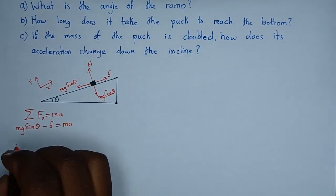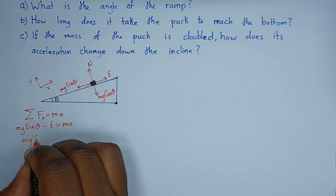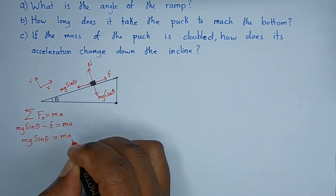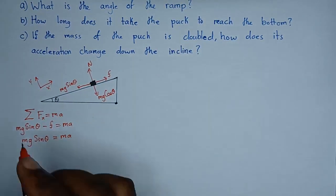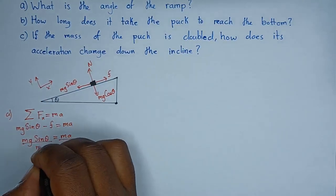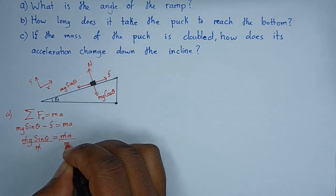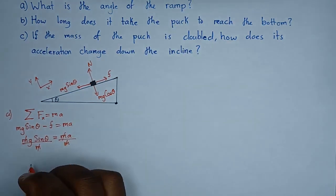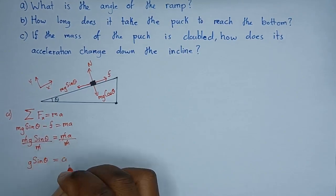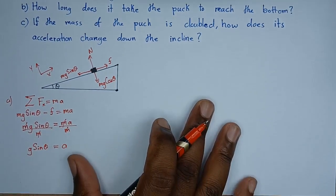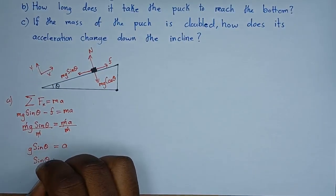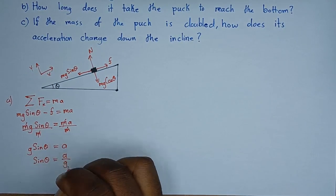So, the force we have is mg sine theta minus friction equals mass times acceleration. Since friction is zero, what we have is simply mg sine theta equals mass times acceleration. So, this is question A. You can get rid of mass by dividing both sides by m. So, mass cancels, meaning that what we have is simply g sine theta equals a. Remember, we're looking for the angle theta. So, sine theta equals a over g.